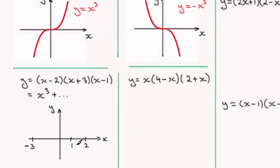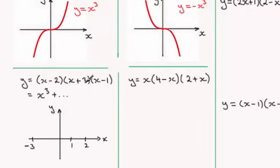Another useful thing is to find where the curve crosses the y-axis, which is when x equals 0. When x is 0, the first factor gives minus 2, the second gives 3, and the third gives minus 1. So we have minus 2 times 3 times minus 1: minus 2 times 3 is minus 6, times minus 1 is plus 6. So it crosses the y-axis at 6.